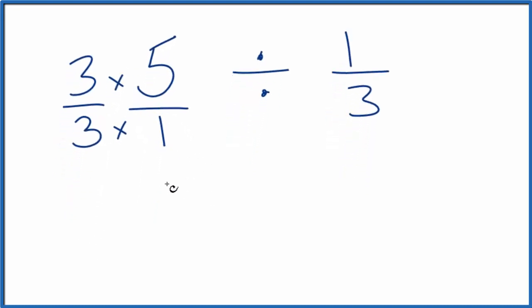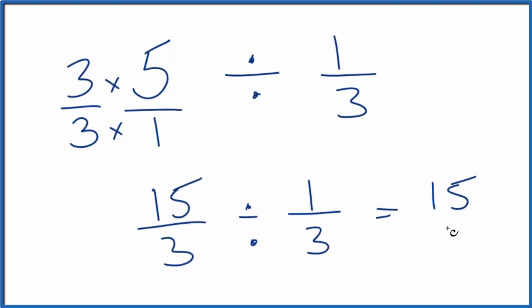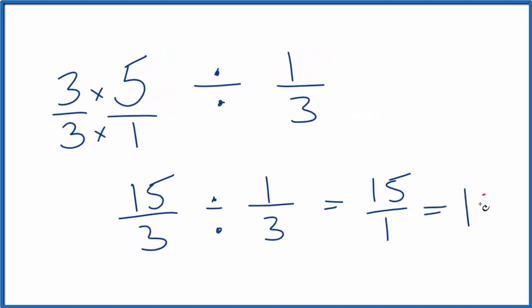But now, 3 times 5, that's 15. 3 times 1 is 3. So 15 over 3 divided by 1 over 3. 15 divided by 1 is 15. 3 divided by 3 is 1. 15 over 1 is 15.